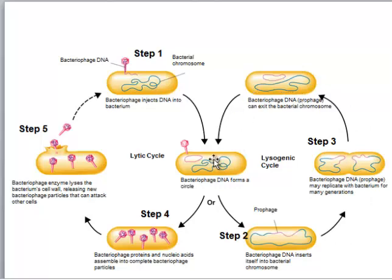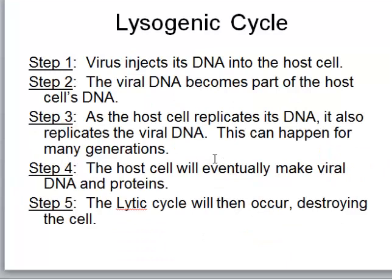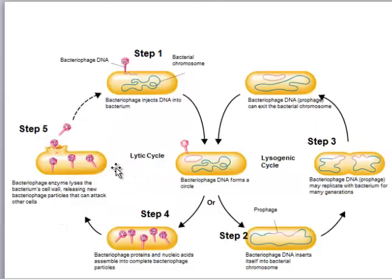Eventually the cell gets triggered to start making the viruses, and at that point we enter the lytic cycle. The host cell starts making viral DNA and proteins, and eventually the cell gets destroyed as those viruses get released. The herpes virus does exactly this — it's a DNA virus that goes in and becomes part of your own DNA, living inside your cells forever. That's why once you start getting cold sores, you can have them for the rest of your life. During times of stress or illness, your body starts making the viruses, they burst open the cells, and that causes the cold sore.